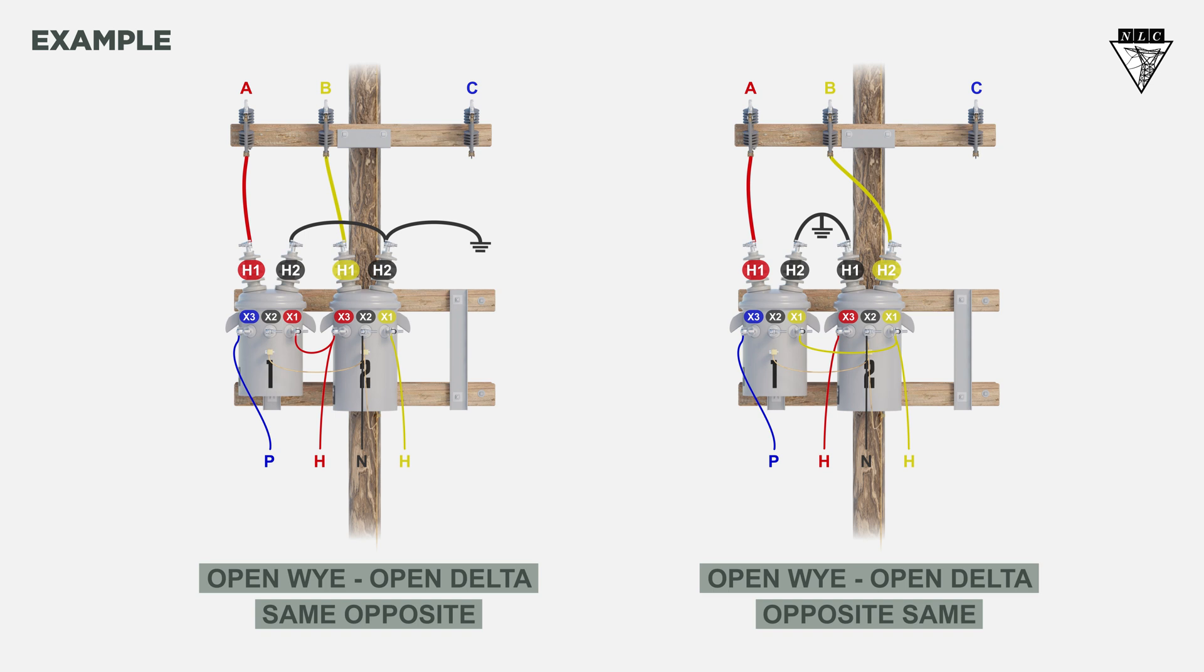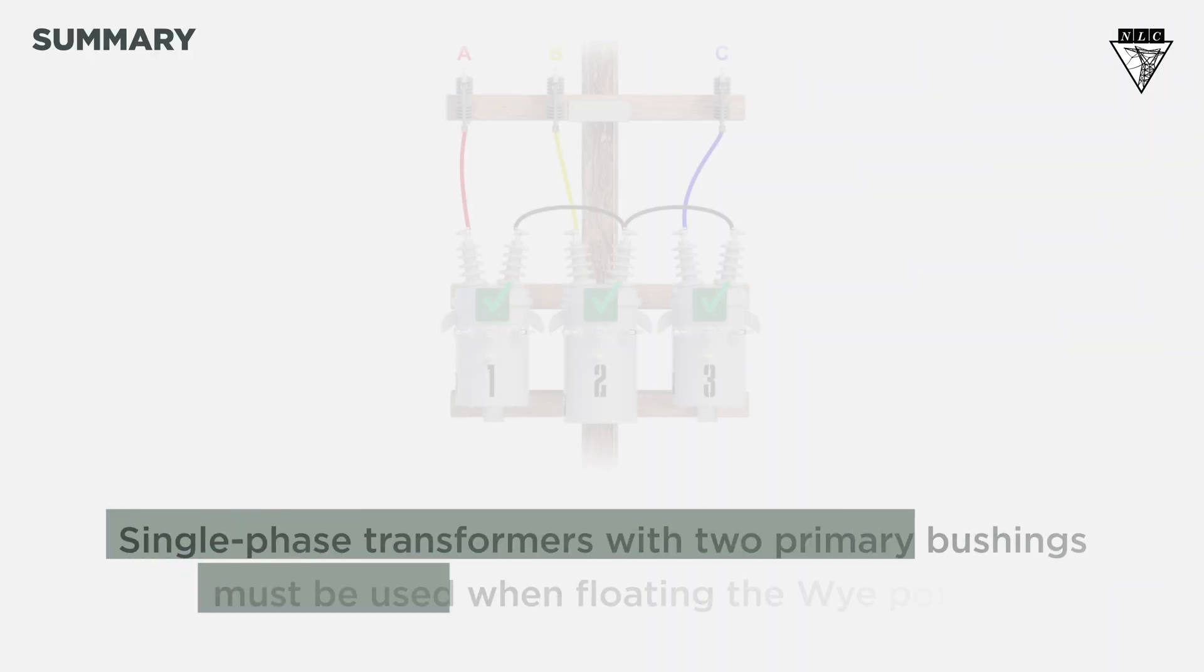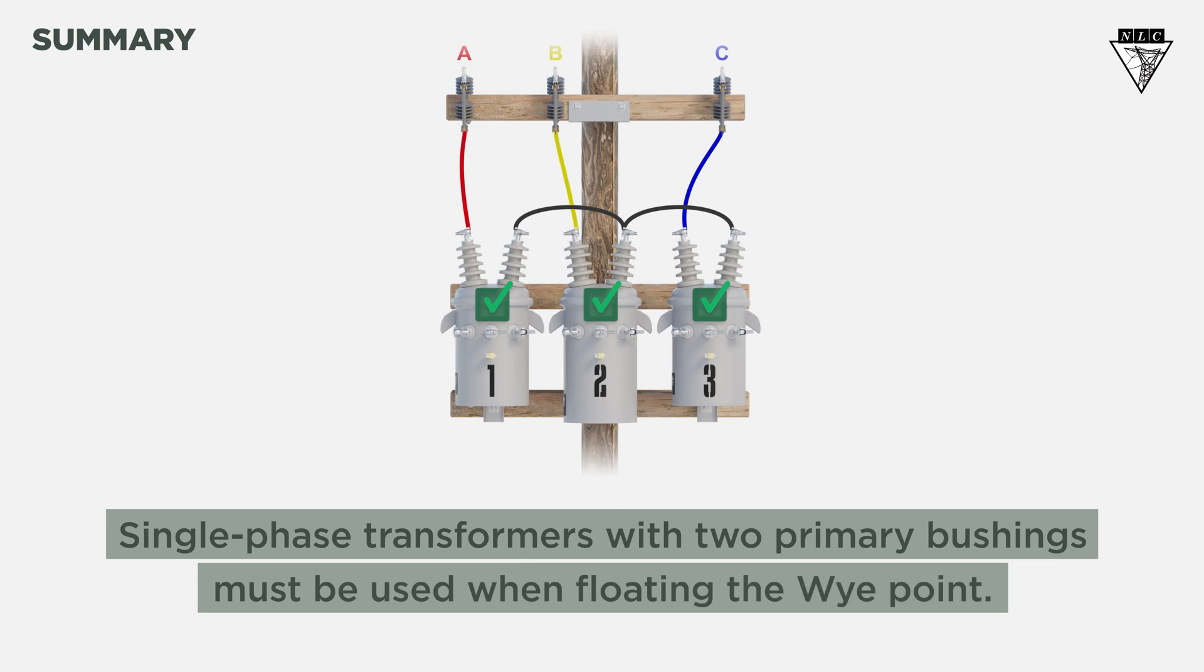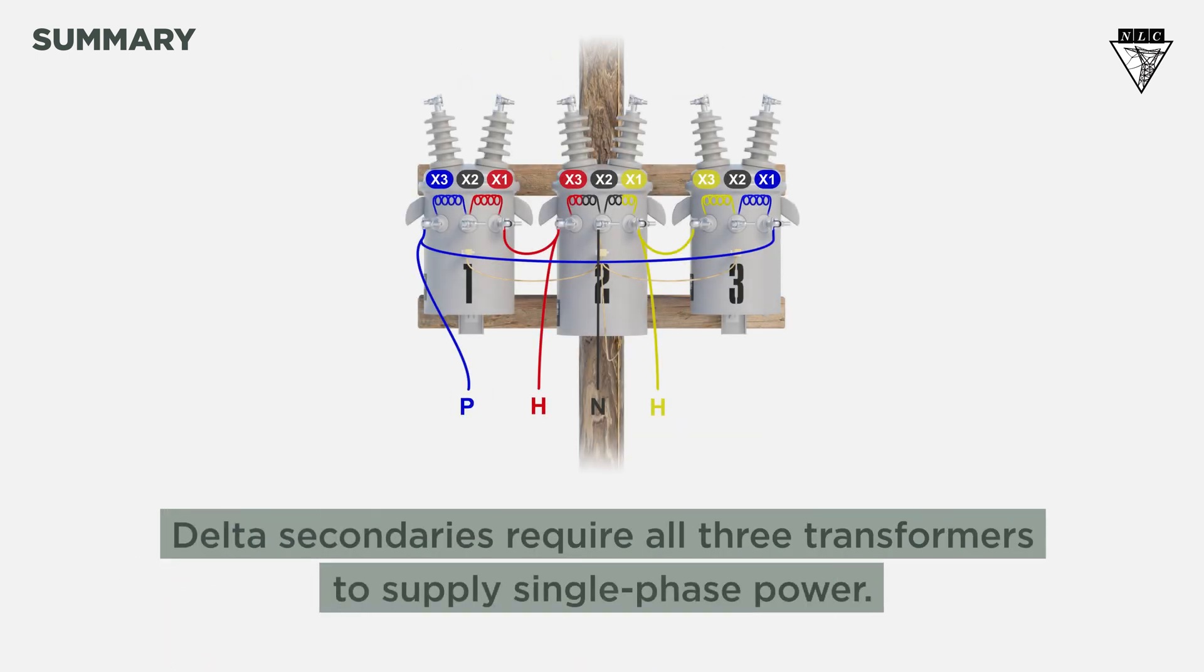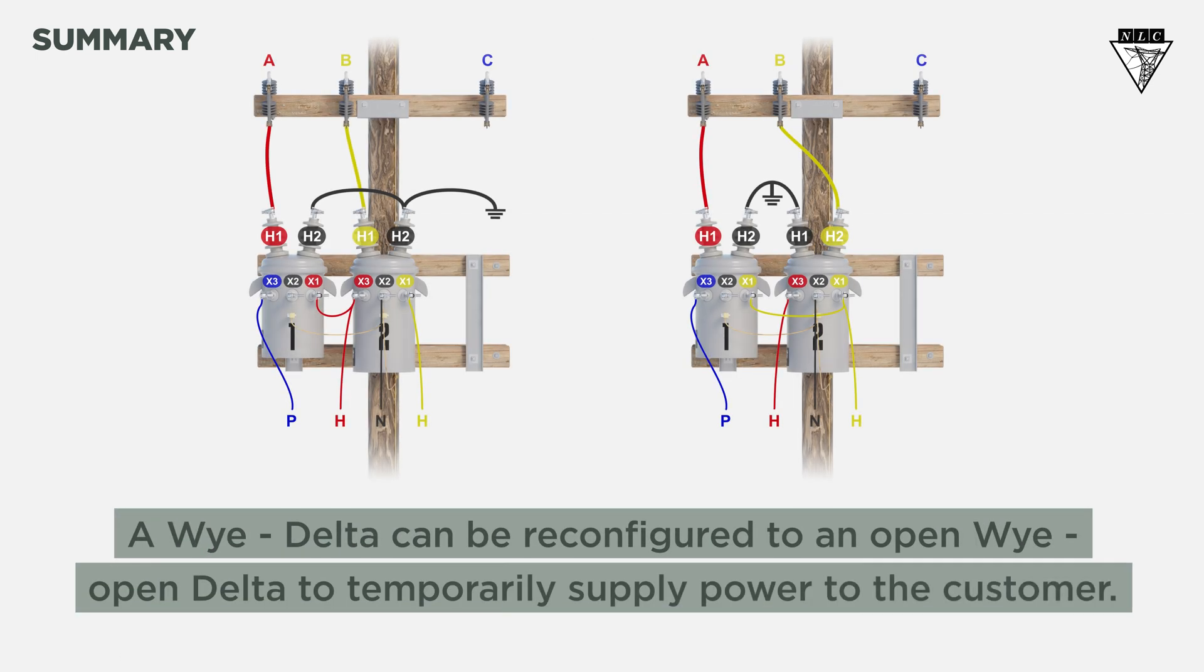So, what did we learn? Single-phase transformers with two primary bushings must be used when floating the Y-point. Delta secondaries require all three transformers to supply single-phase power. A Y-delta bank can be reconfigured to an Open Y Open Delta to temporarily supply power to the customer.